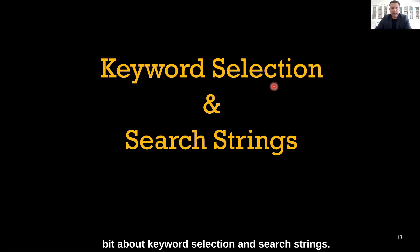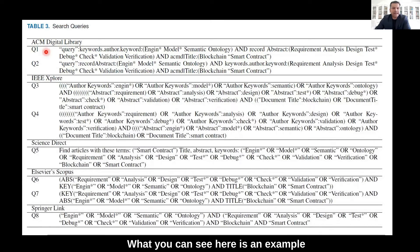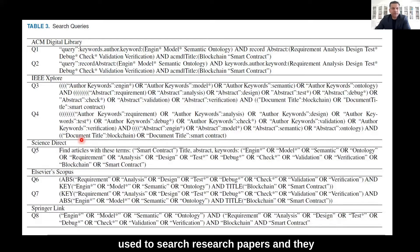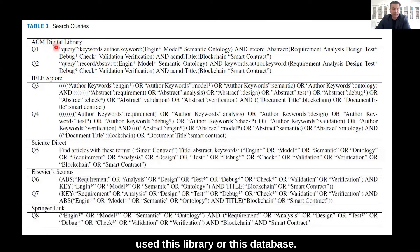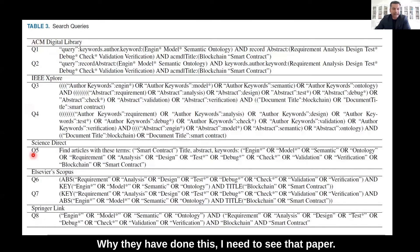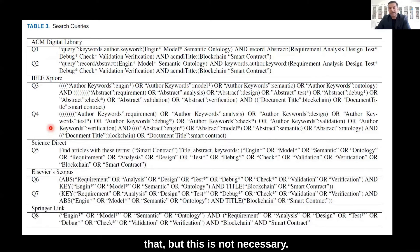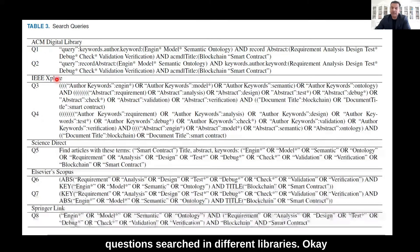I want to talk about keyword selection and search strings. Here is an example from one paper where they have used five databases to search research papers for two research questions. For some research questions they used one library, for others they used different ones. This is not necessary — you could have all research questions searched across all different libraries.